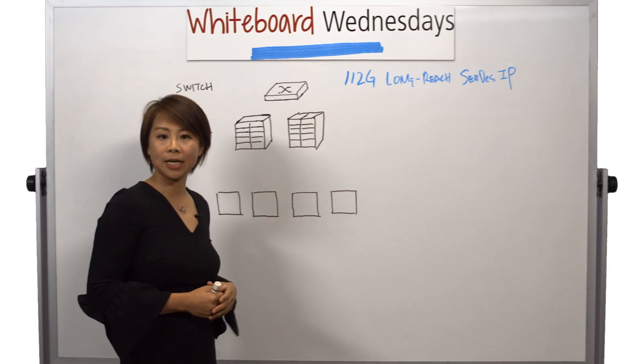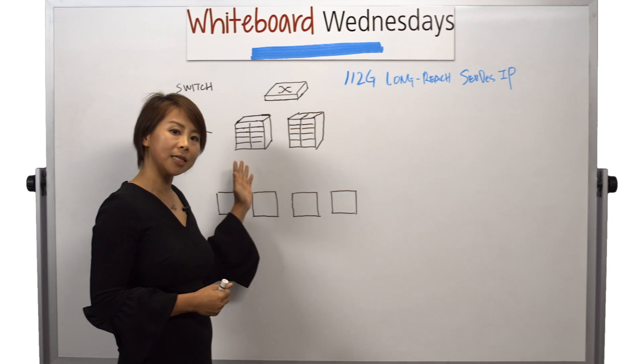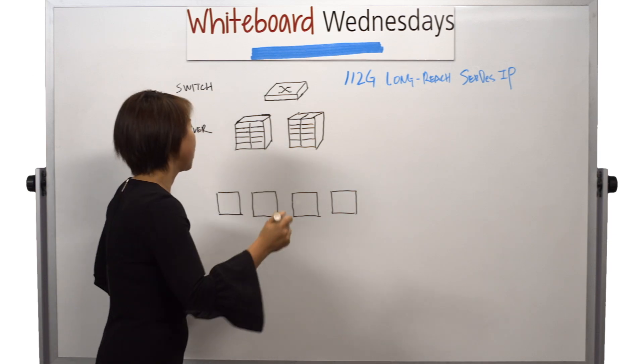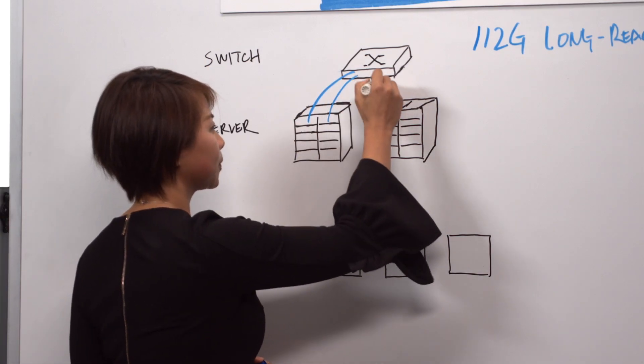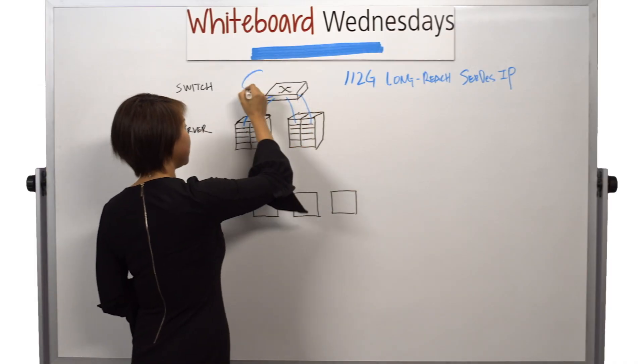In a hyperscale data center, there are a lot of server machines, and these machines need to be connected. Usually they're connected through a switch, and there are a lot of these switches that form the network.